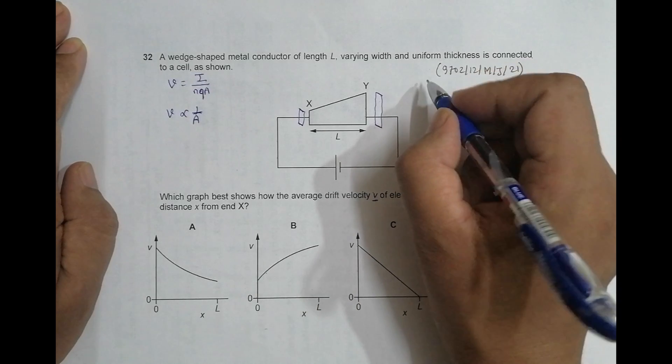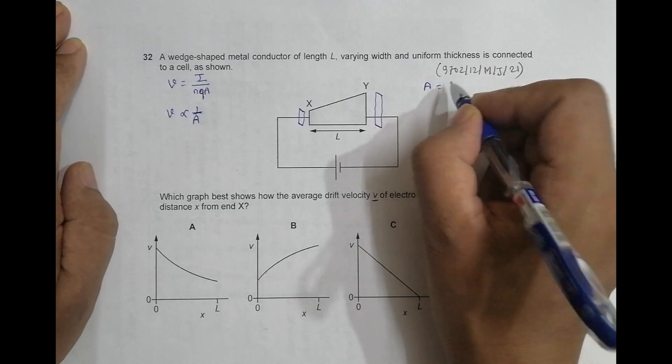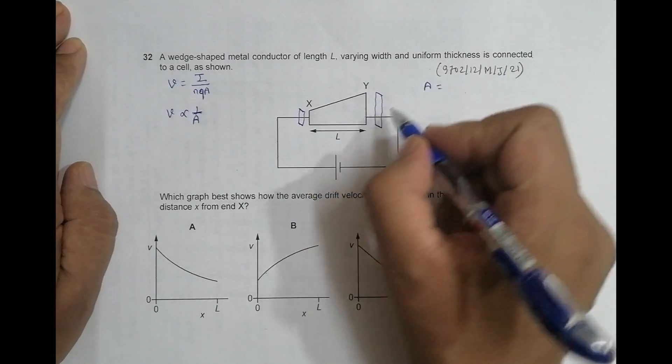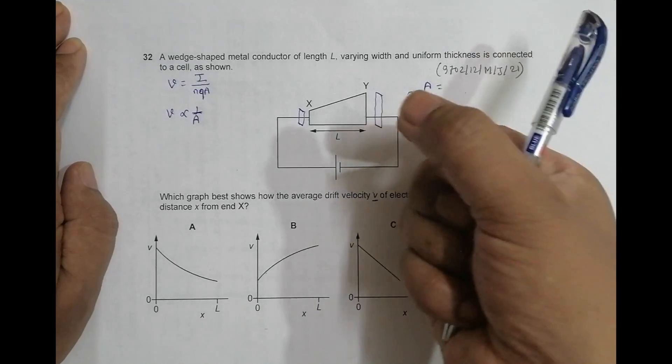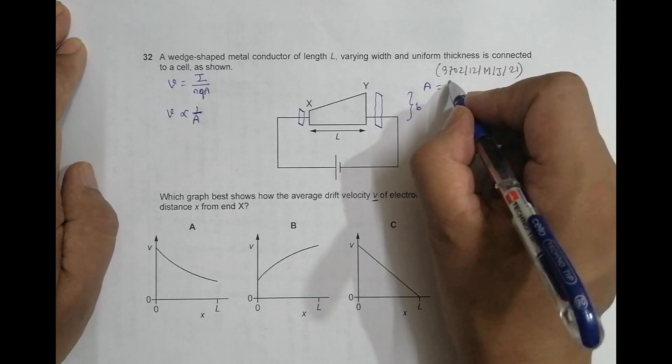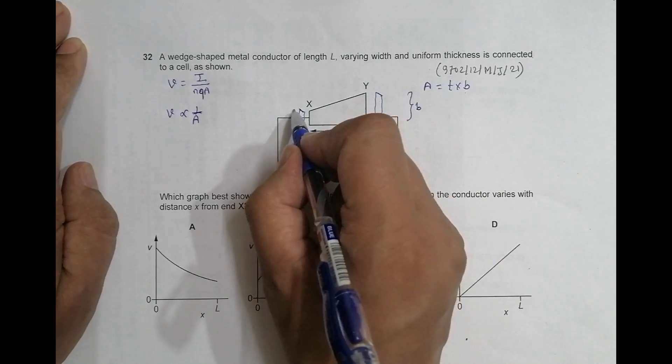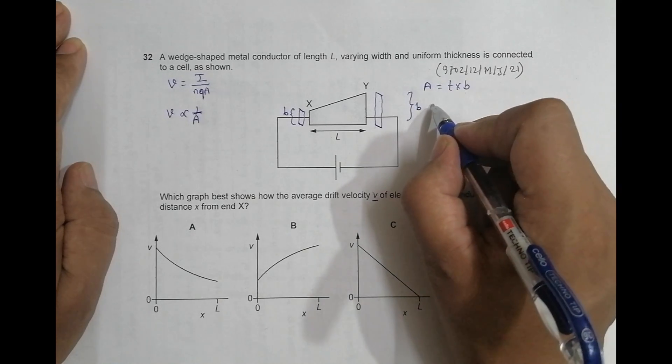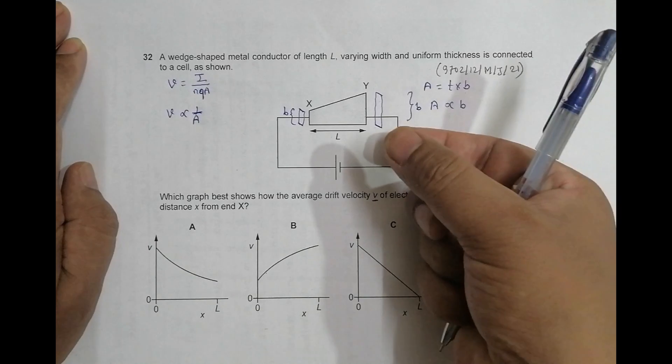So what I can see here is the cross-sectional area A is equal to - let us say this is the breadth. If I say this is the breadth and this is the thickness, so it will be equal to thickness into breadth. So A is proportional to B, that means because the thickness is constant.